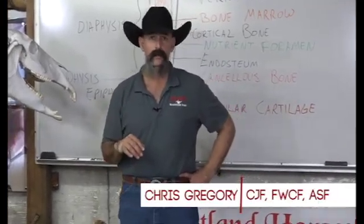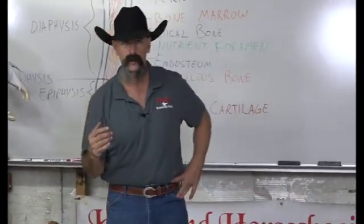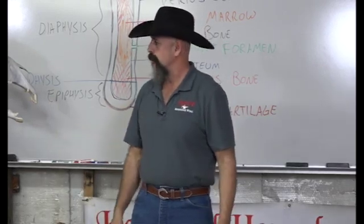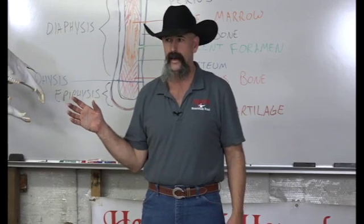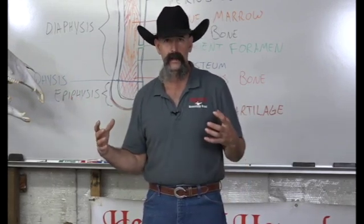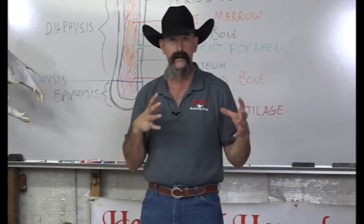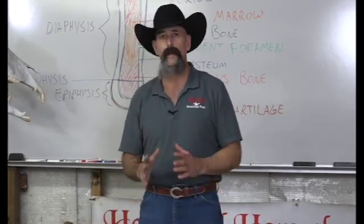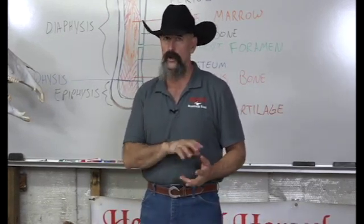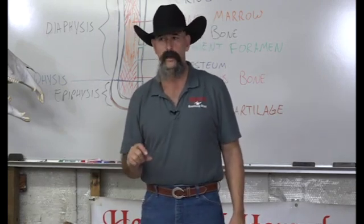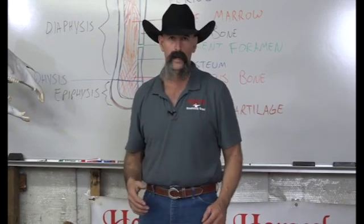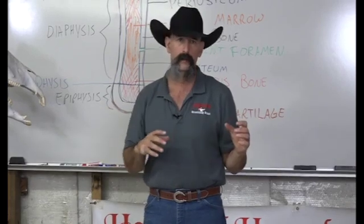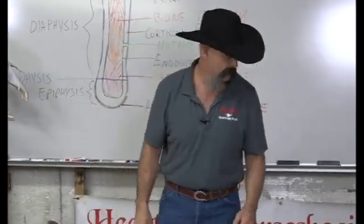Now that we have some of the terminology, let's discuss the skeletal system. The skeleton is the framework that the horse's muscles, tendons, and ligaments all run on — think of it as a biomechanical frame with muscles and tendons as cables, like a crane. Bone is very dynamic; the oldest bone in your body is only five years old. It's always being broken down and replaced on a molecular level.